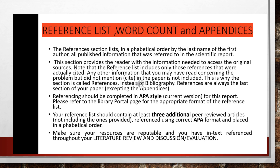References are always the last section of your paper and should be completed in APA 7 style. Please refer to the library portal page for the appropriate format. The reference list should contain at least three additional peer-reviewed articles — resources you've looked at, not including any provided by us — referenced using correct APA 7 format and placed in alphabetical order. Make sure your resources are reputable and that you have in-text references throughout your entire research proposal. Good luck.